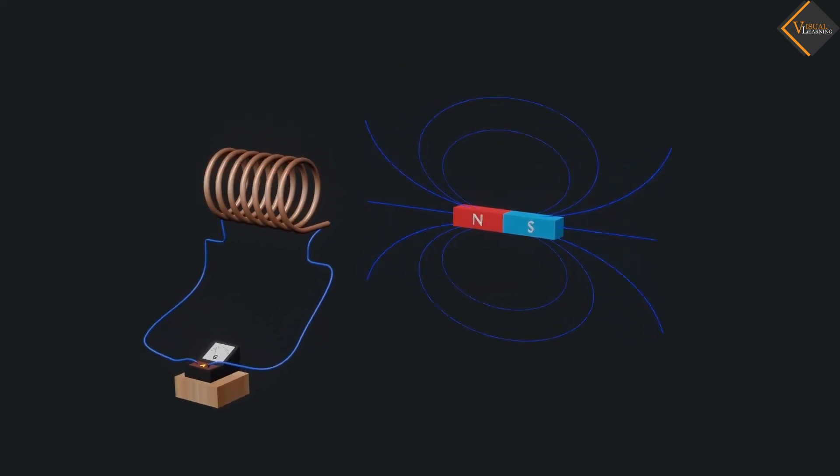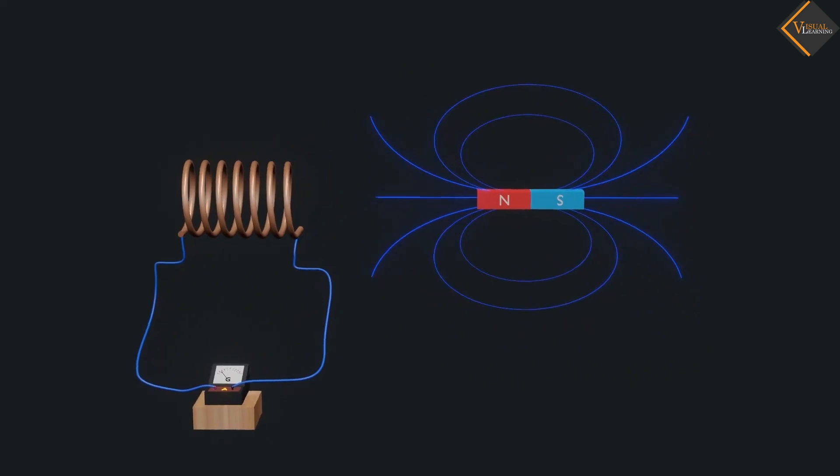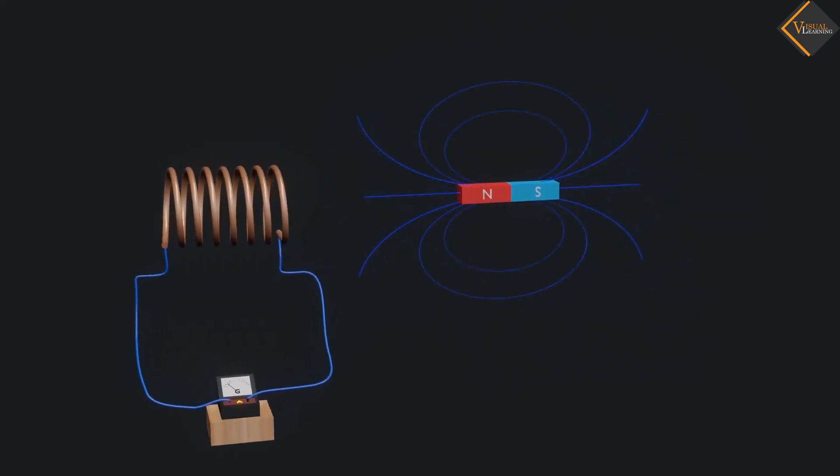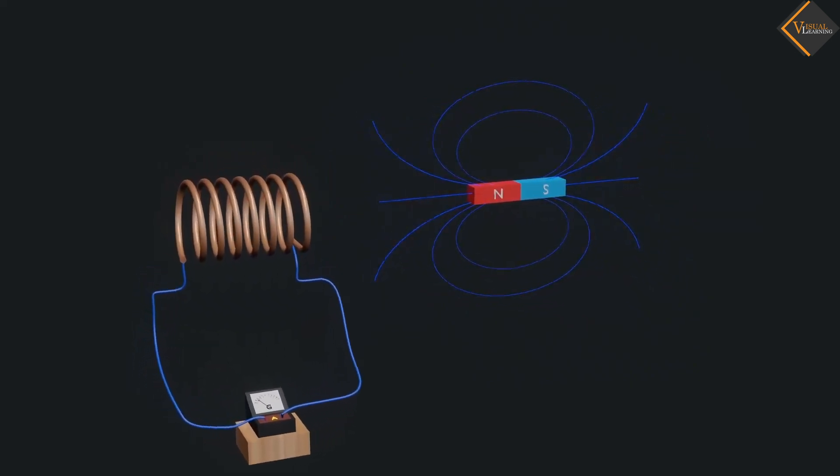Place the bar magnet stationary at a point near to the coil and keeping its north pole towards the end B of the coil.